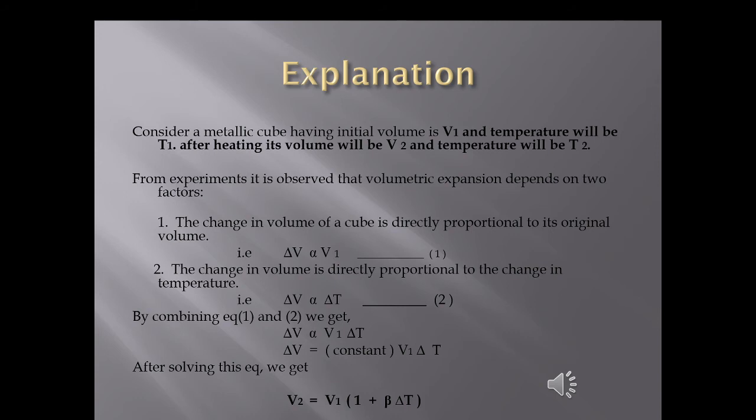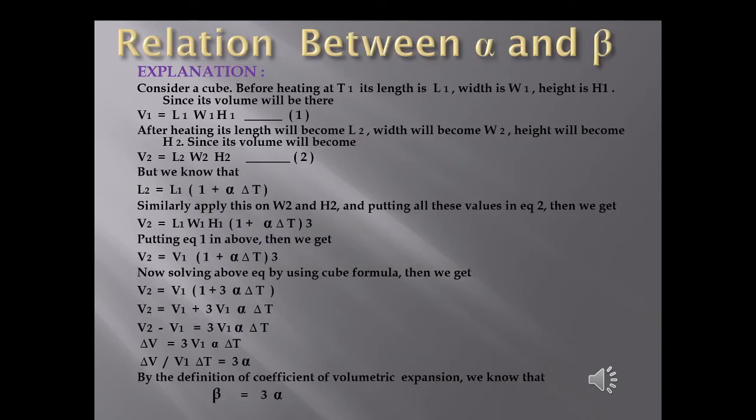Now we discuss the relation between alpha and beta — that is, between the coefficient of linear expansion and the coefficient of volumetric expansion. For this purpose, consider a cube before heating at temperature T1 with length L1, width W1, and height H1. Its volume will be V1 = L1 × W1 × H1.